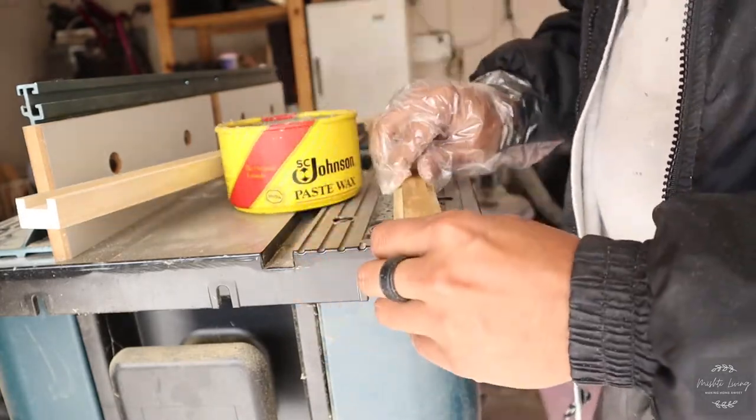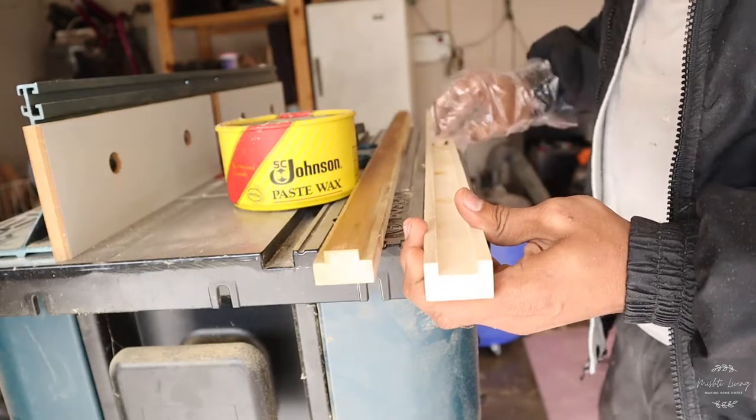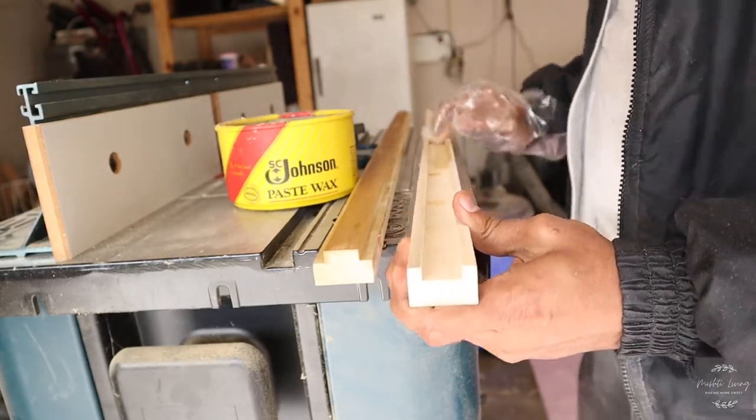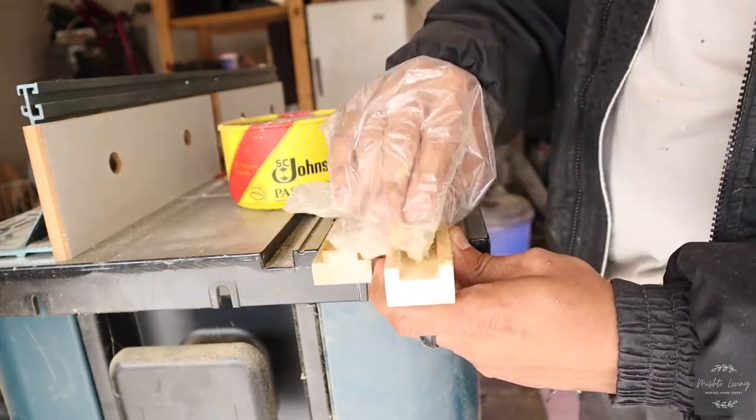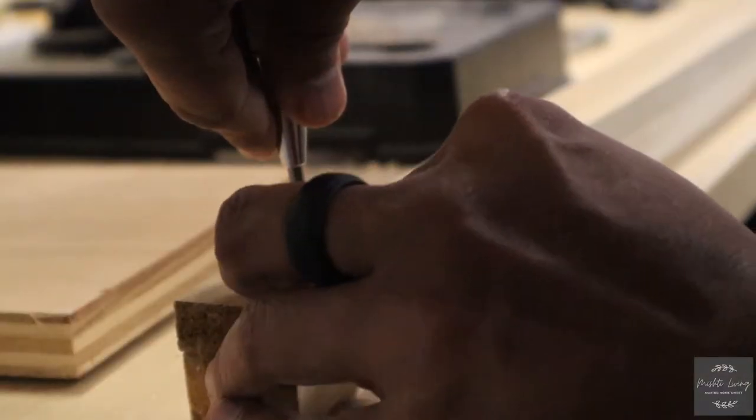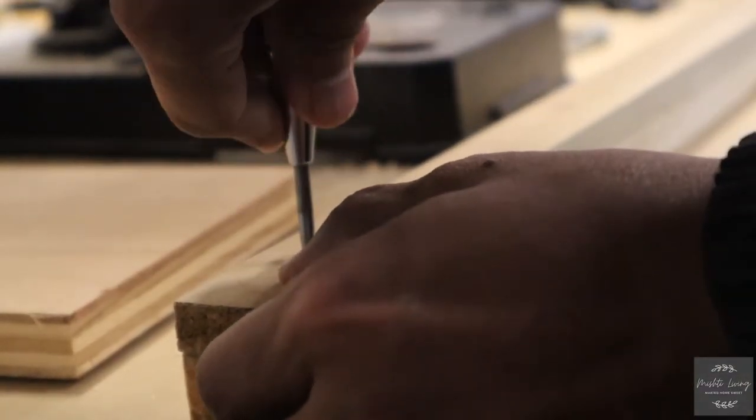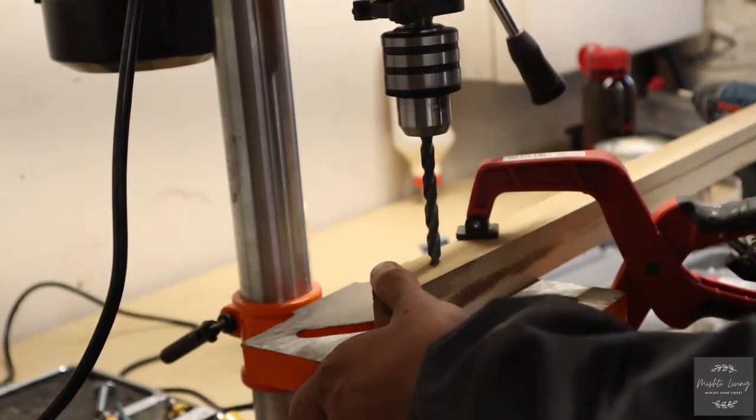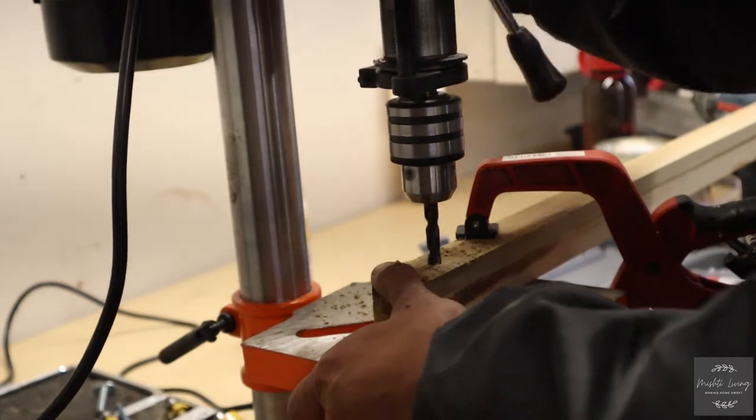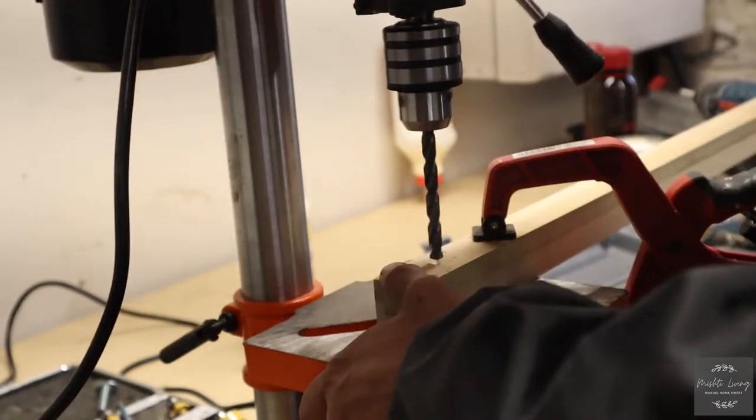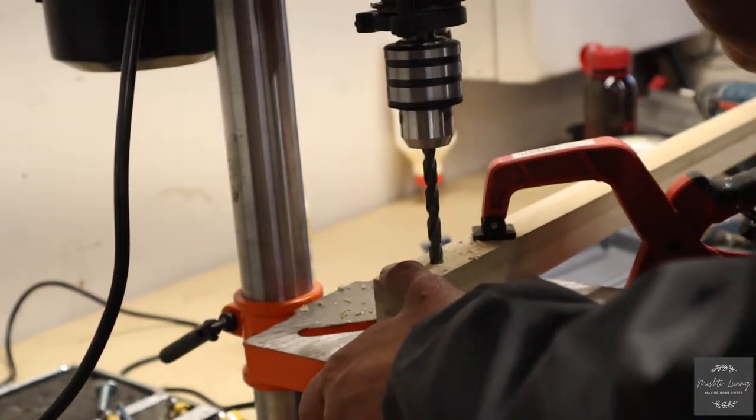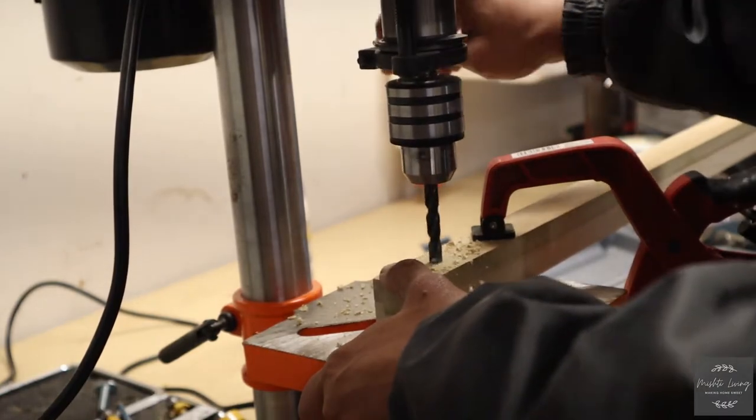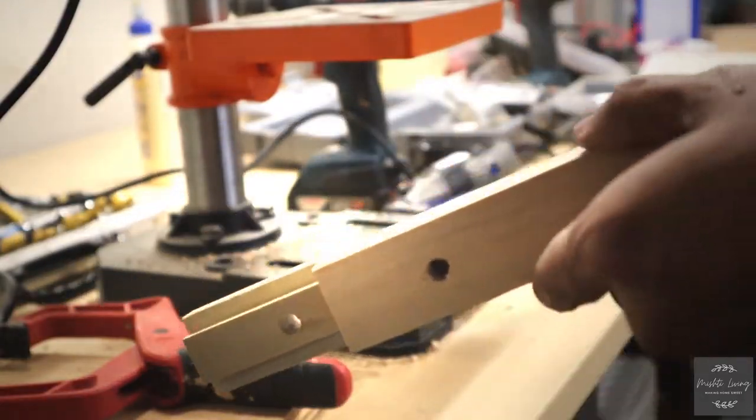To make the sliding mechanism a little bit smoother, I use some paste wax. Then I take my center hole punch and make a pilot marking right in the center. I use my drill press to drill a hole one quarter of an inch wide through both the groove and the tongue pieces, and I do that on both ends.